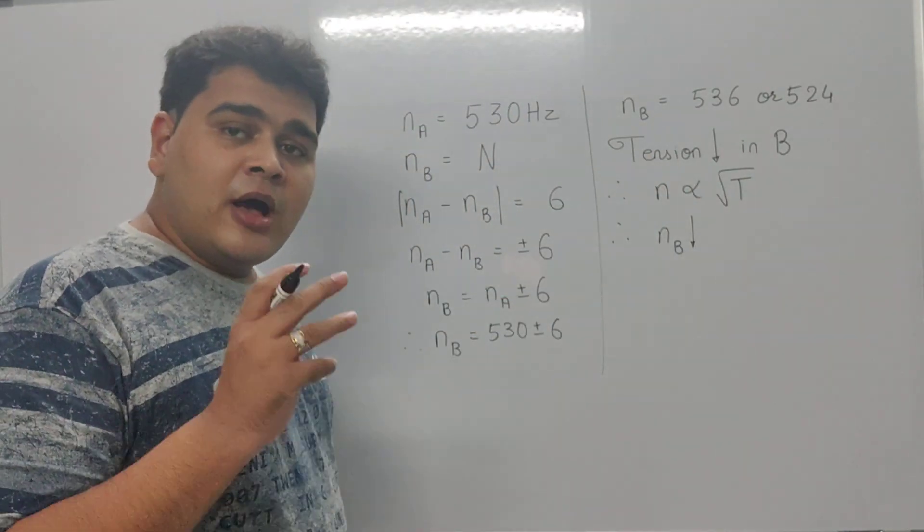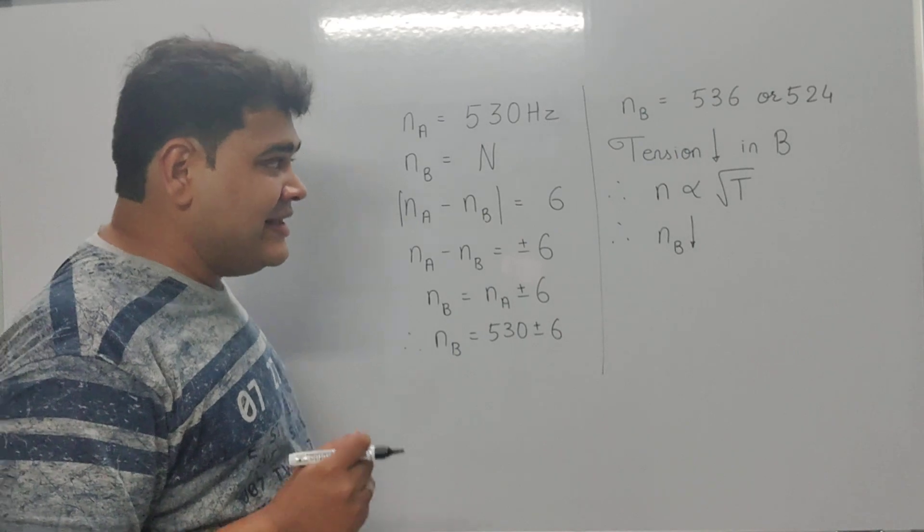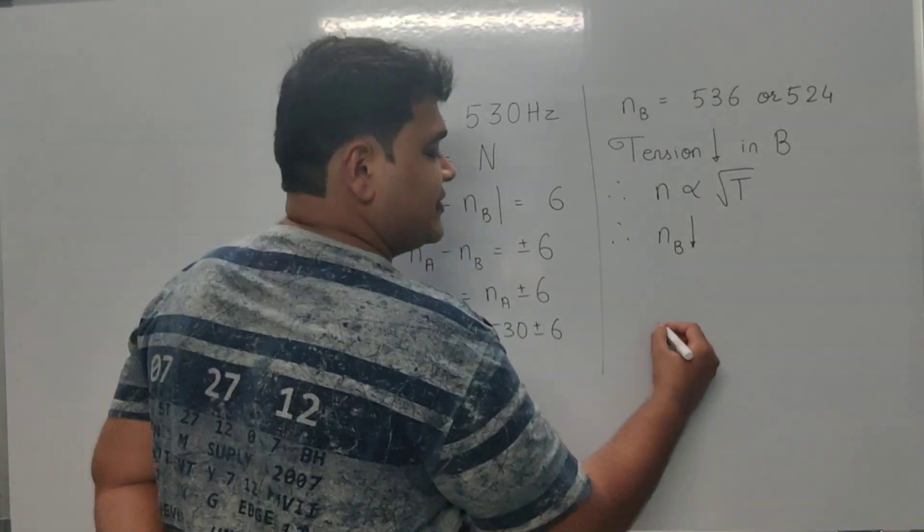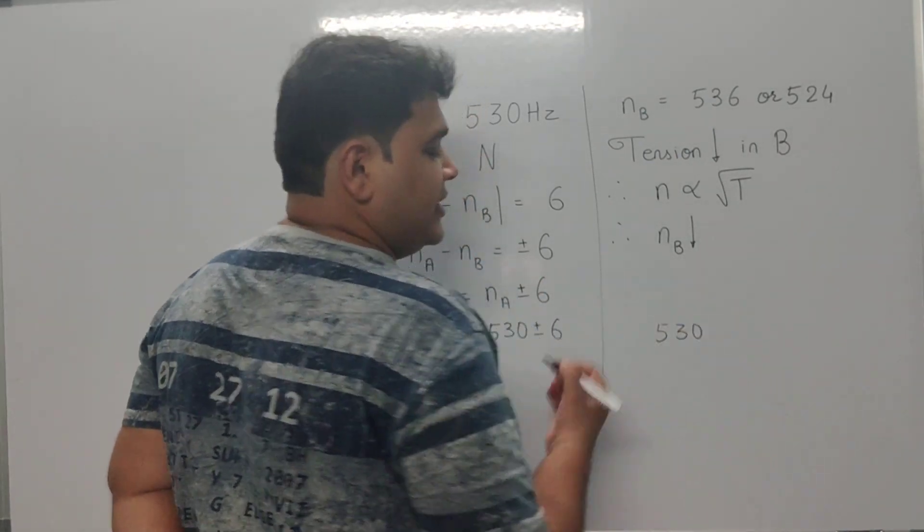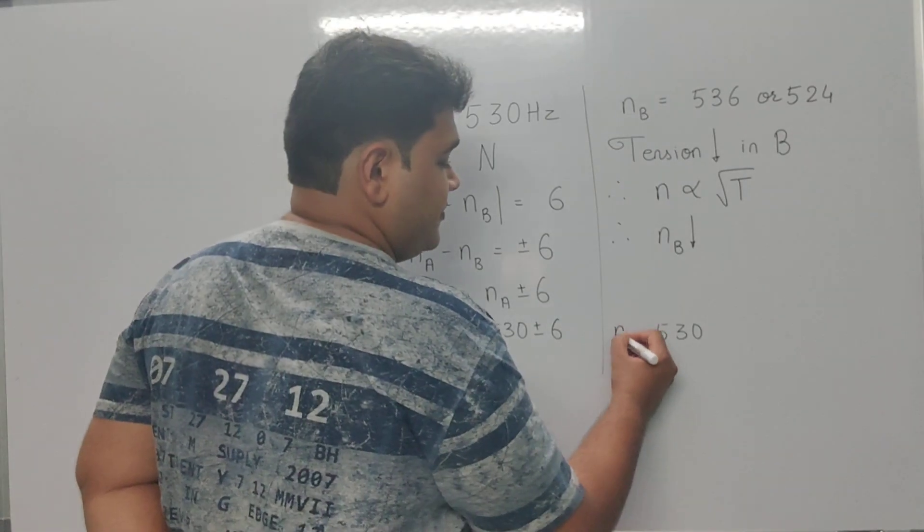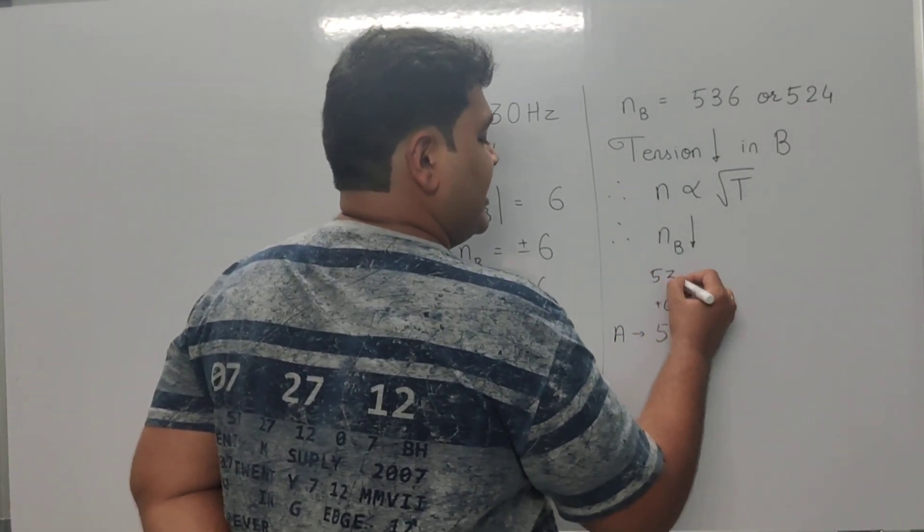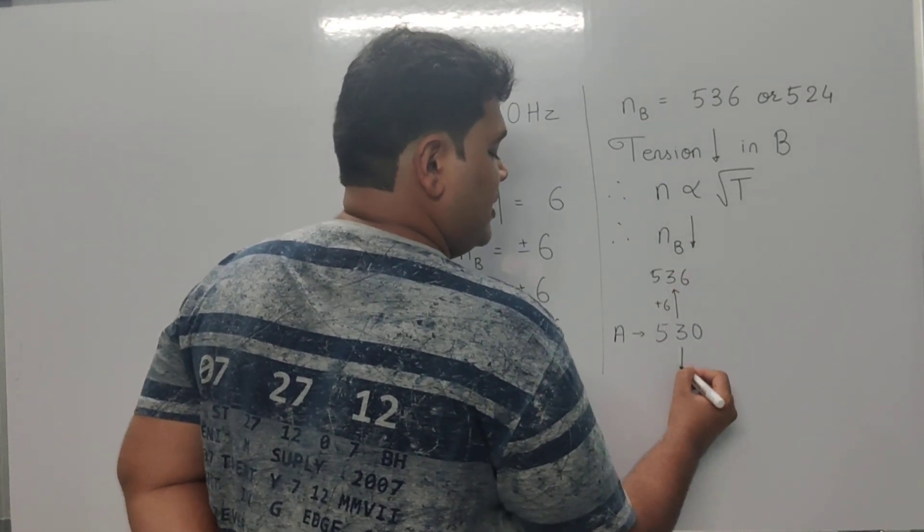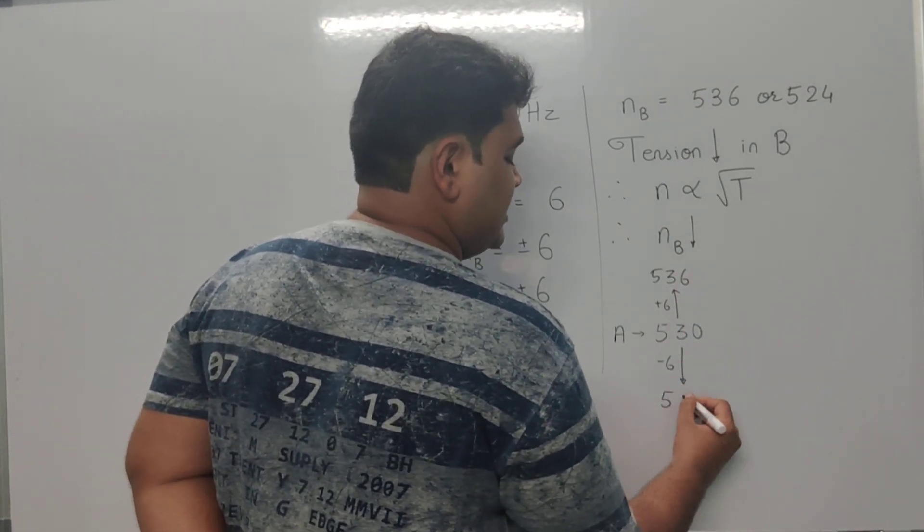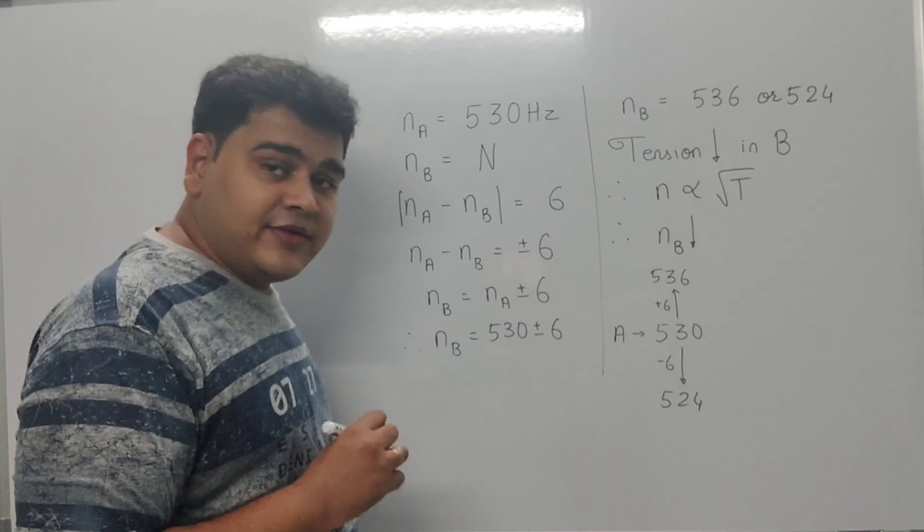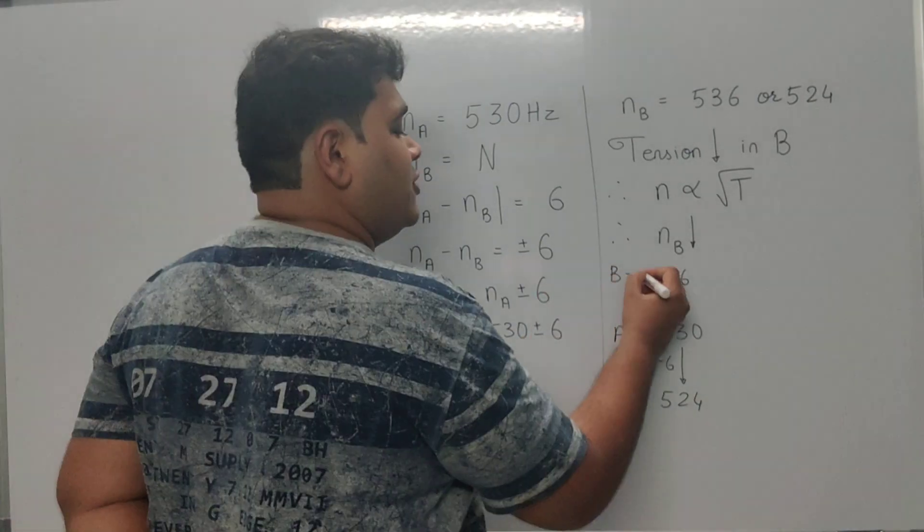Now if the value of N_B decreases, I can write: 530 is the frequency of A. If I go plus 6, I get 536; if I go minus 6, I get 524. So these are the possible values of B.